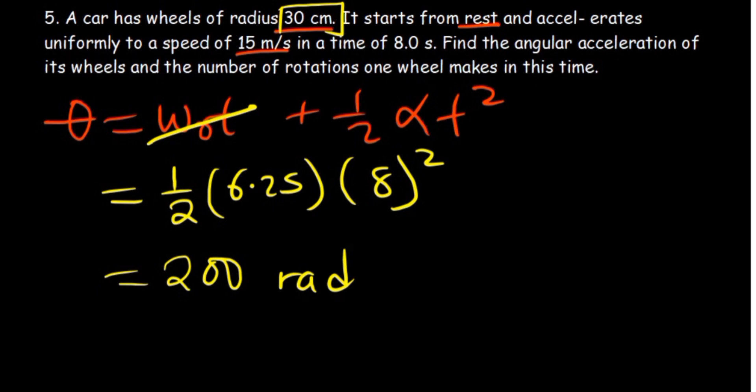Now you want the number of rotations. How many radians are in a single rotation? So one rotation has 2π radians.